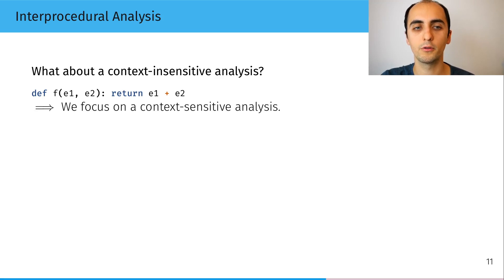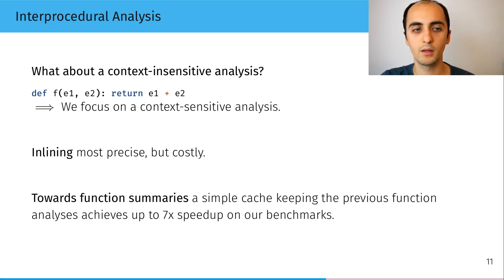So that's why we focus on the context-sensitive analysis. We started using inlining, which is the most precise but also the most costly approach. And then we now have a simple cache which keeps the previous function analysis and allows us to have up to a seven times speedup on our benchmarks.